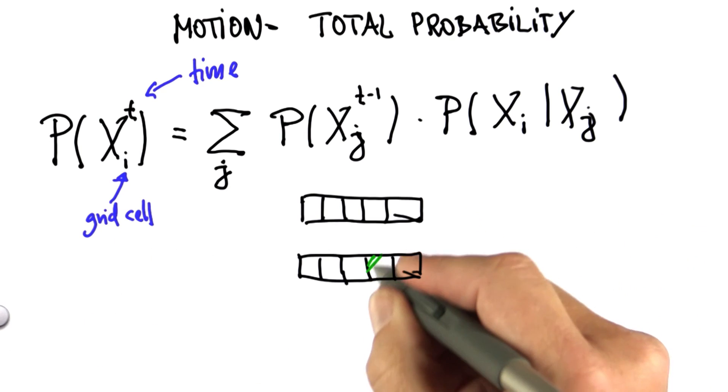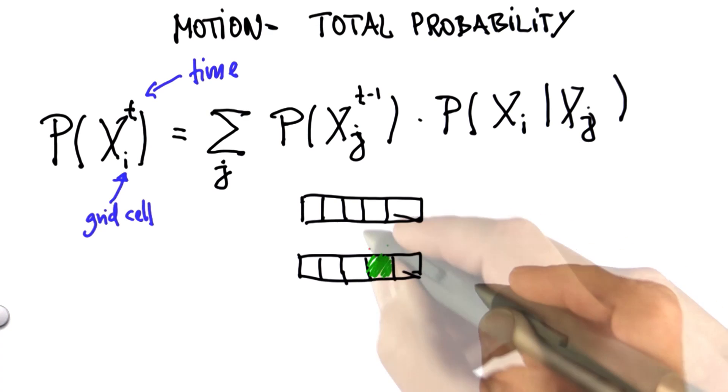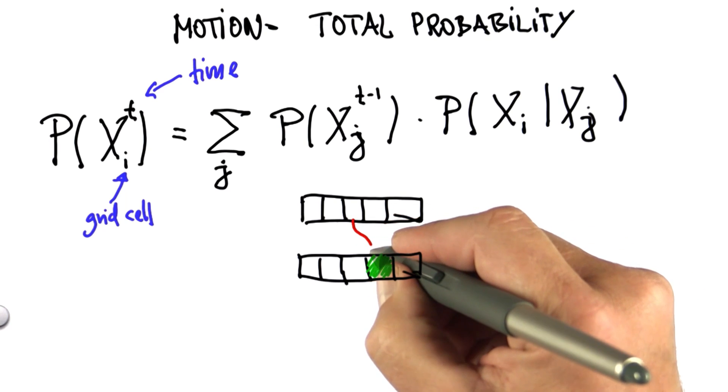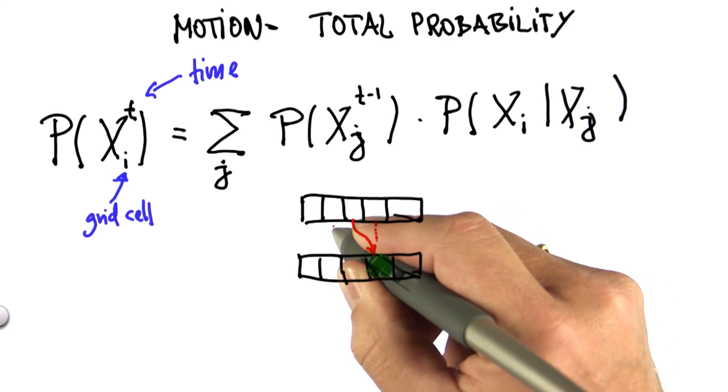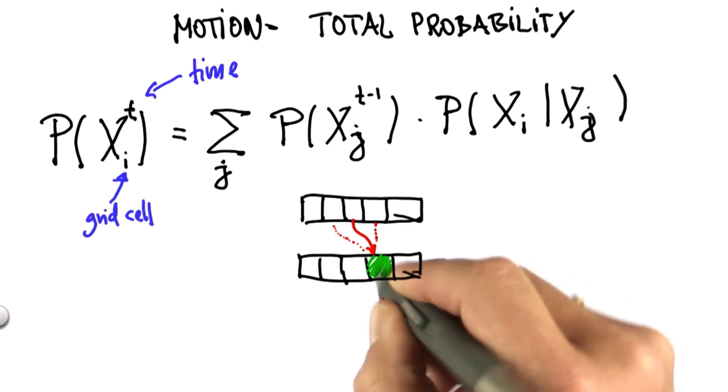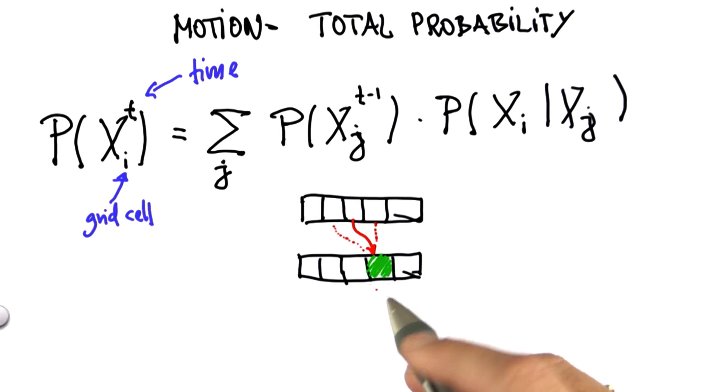So this was exactly what we implemented. If there were our grid cells over here, and we asked one time step later about a specific grid cell over here, we would combine 0.8 from over here, 0.1 from over here, and 0.1 from over here into the probability of this grid cell.